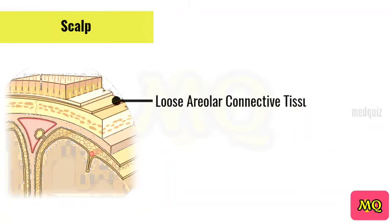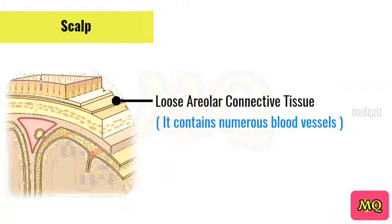The epicranial aponeurosis is a thin tendon-like structure that connects the occipitalis and frontalis muscles. Loose areolar connective tissue is a thin connective tissue layer that separates the periosteum of the scalp from the epicranial aponeurosis. It contains numerous blood vessels, including emissary veins.